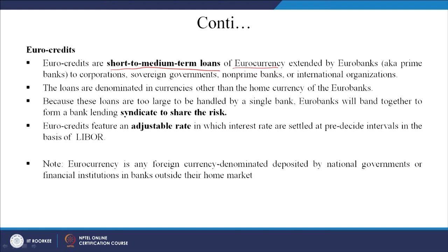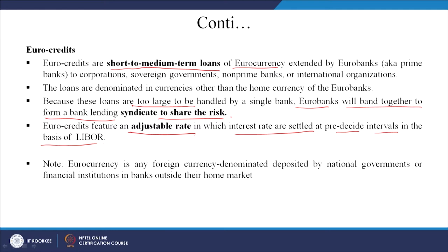The loans are denominated in currencies other than the home currency of the euro banks. These loans are too large to be handled by a single bank, so euro banks band together to form a bank lending syndicate to share the risk. Euro credits involve large-valued loans. They feature an adjustable rate where interest rates are settled at pre-decided intervals on the basis of LIBOR — the London Interbank Offer Rate — plus the lending margin added by each bank.